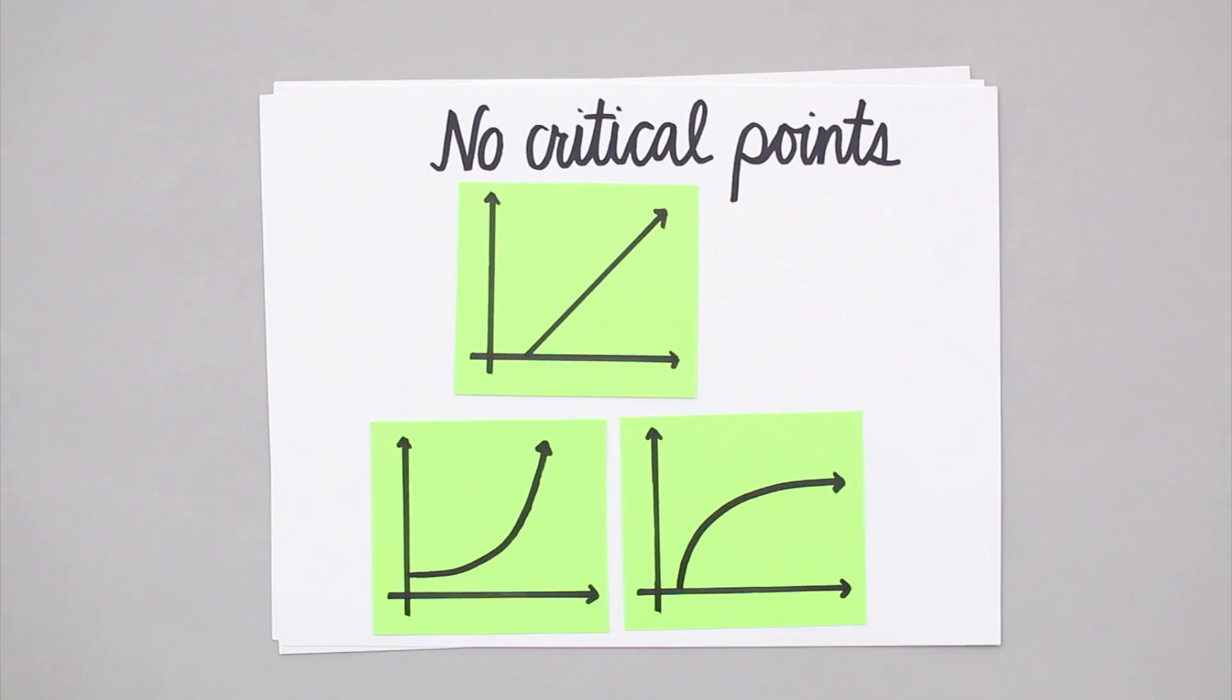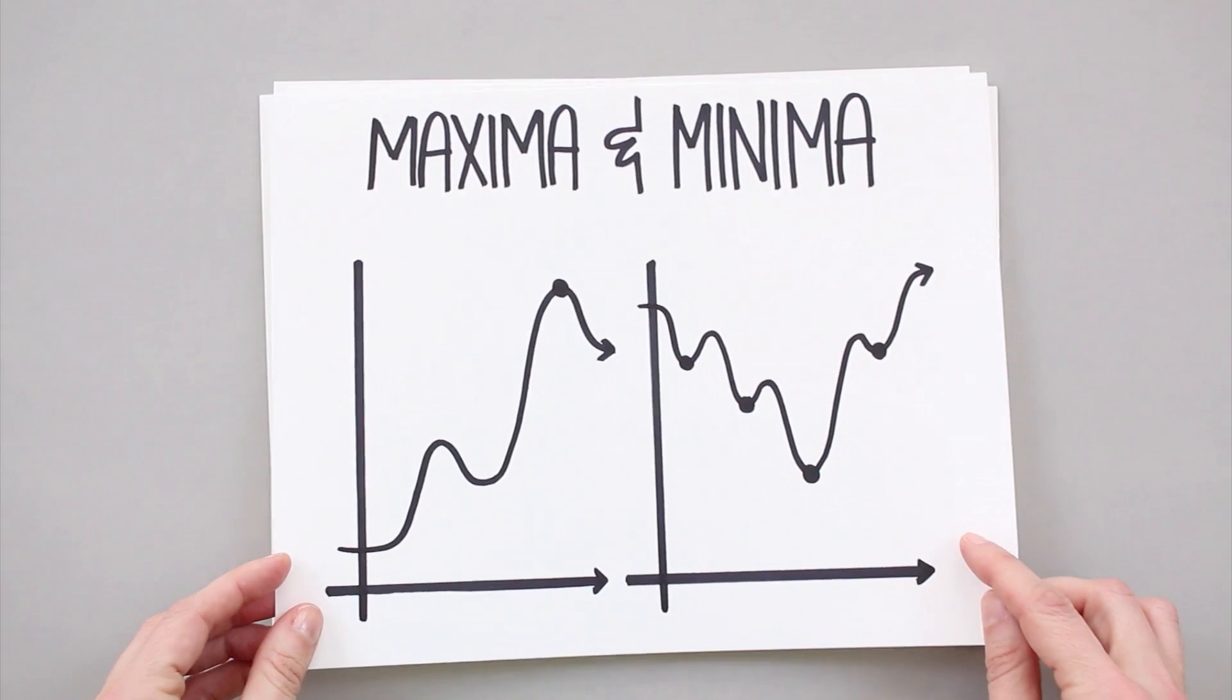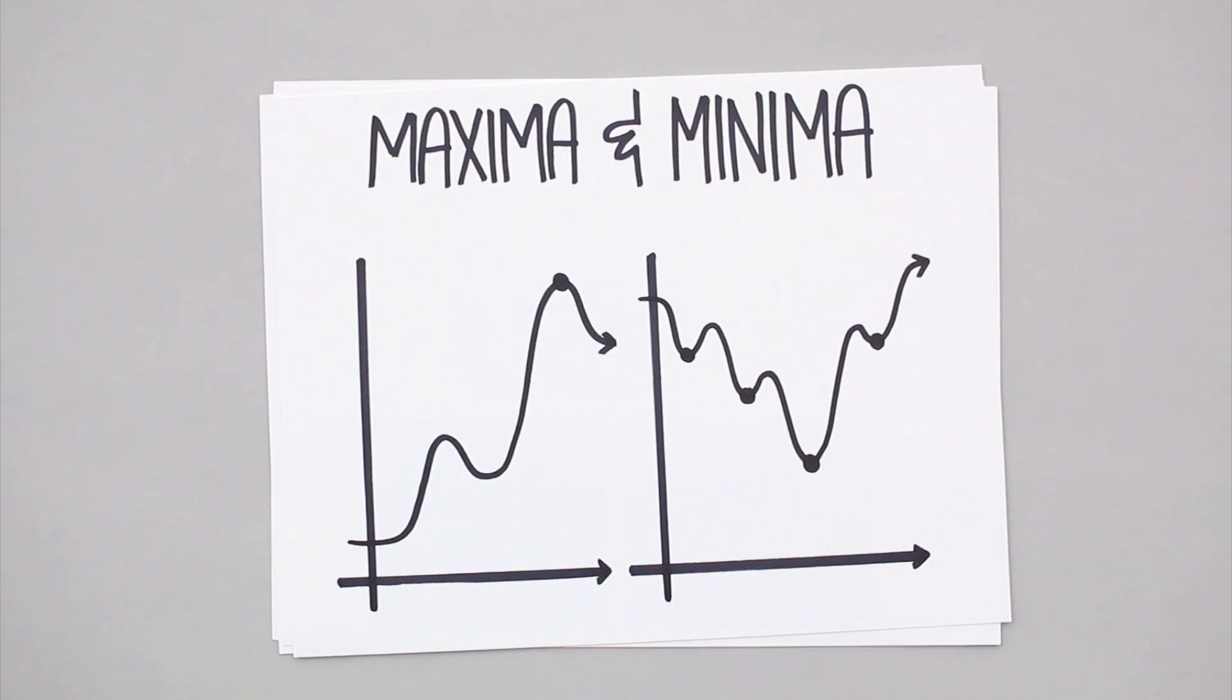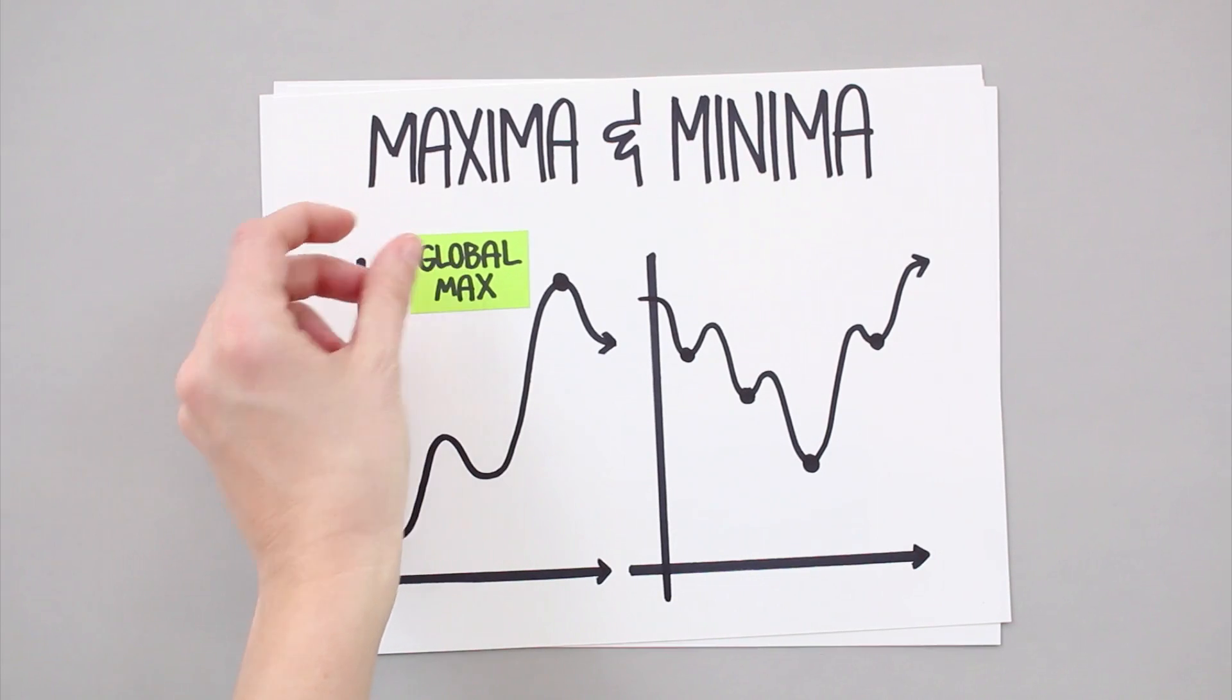Before we get even further into discussing critical points, let's take a look at what it means for a point to be a function's maximum or minimum. When we look at the graph of a function, we can see that the curve doesn't get any higher than this point for the entire interval of the function we're looking at. That is, the coordinates for this point contain the highest y value of the function, so we would call that the function's maximum.